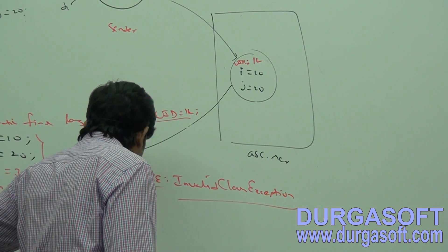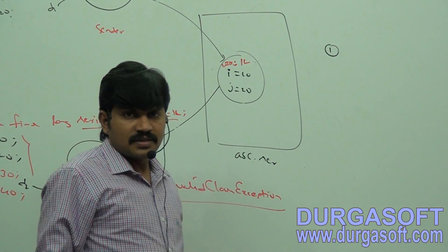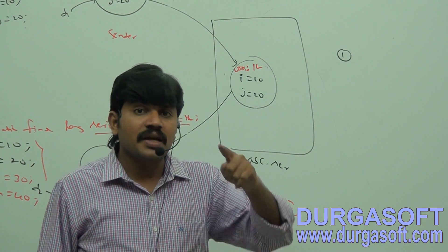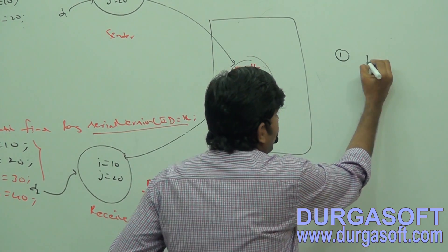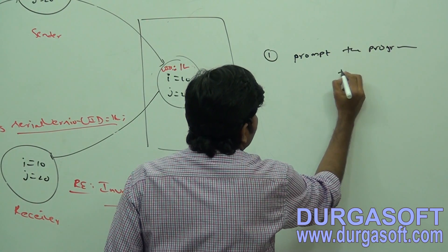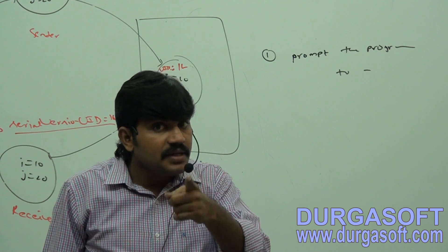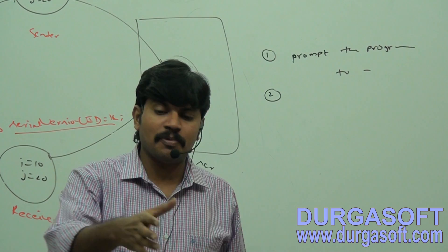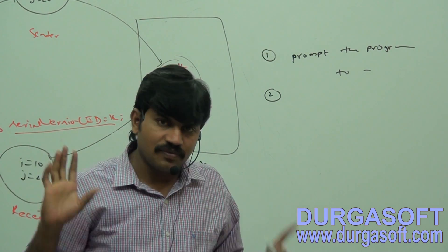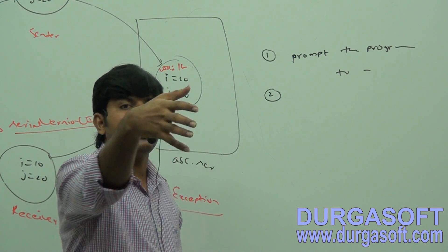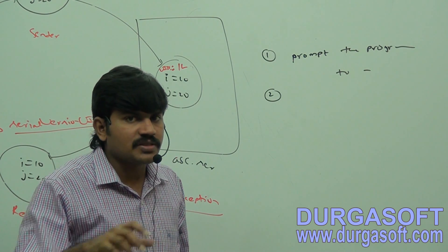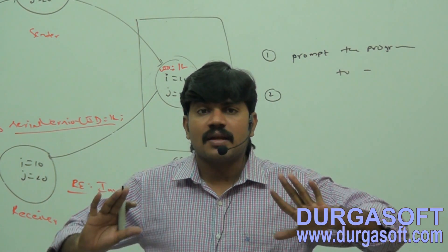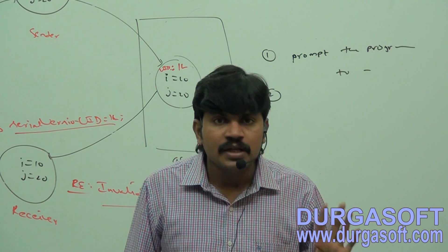If you are working on IDEs like Eclipse or MyEclipse, whenever you write implements Serializable, the IDE prompts the programmer to enter a serial version UID, because the IDE is aware of this problem. Some intelligent IDEs will automatically generate the serial version UID explicitly, instead of giving the chance to the JVM. The IDE is doing this to solve exactly these types of problems.